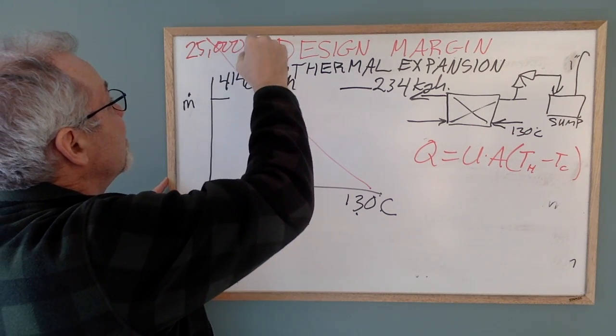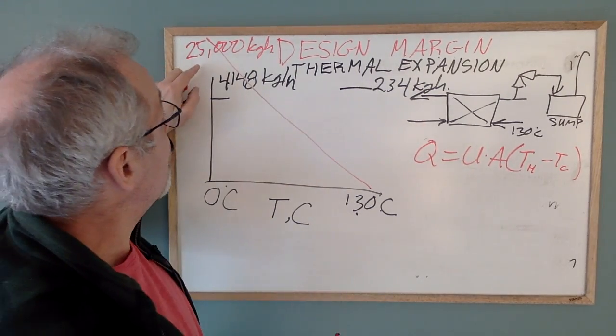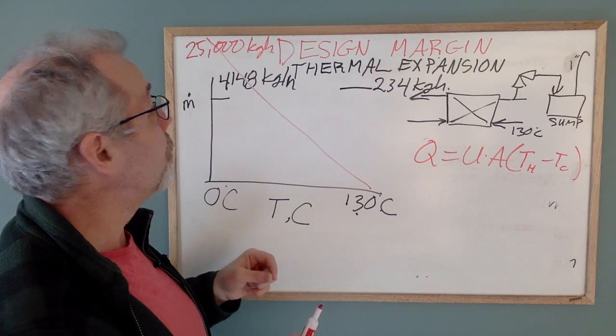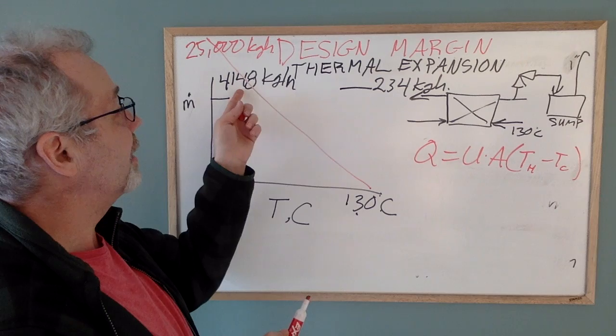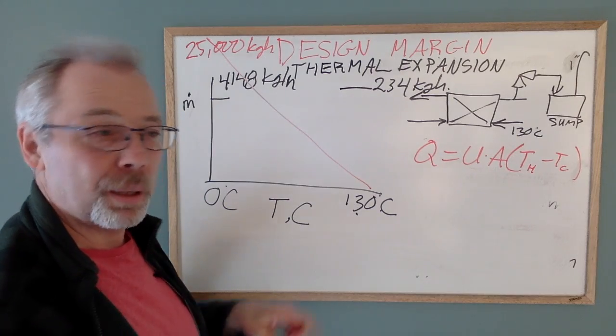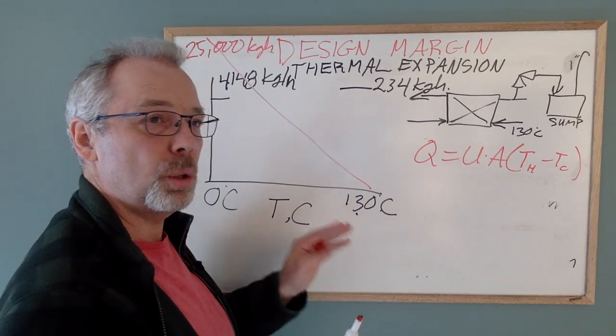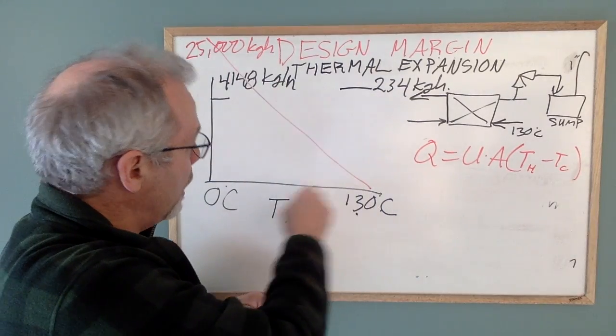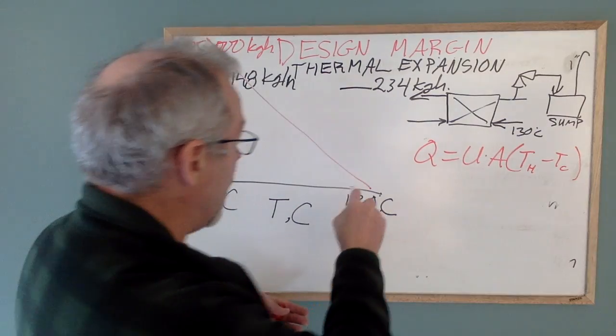The mass flow of liquid that's relieving at 0 Celsius is a horribly high value of 25,000 kilograms an hour, which causes me a bit of grief because that's vastly higher than the 4,000 and change that we got from the API calculation. But let's just put aside our urge to question the wisdom of API. Instead, let's look at the flashing steam. We'll take this flow rate and the temperature and do the flash calculation. See how much steam we make.